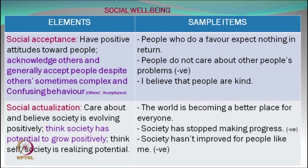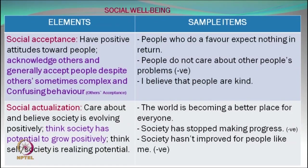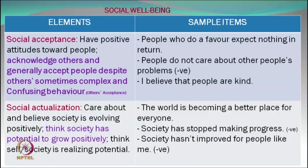Next are questions related to social well-being. The first factor is social acceptance: having positive attitudes toward others and generally accepting people despite their sometimes complex and confusing behaviours. Questions: 'People who do a favour expect nothing in return' (positive); 'People do not care about other people's problems' (negative); 'I believe that people are kind' (positive). High score on first and third and low on the middle one = high social acceptance.